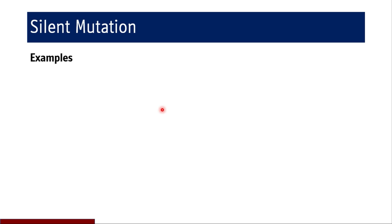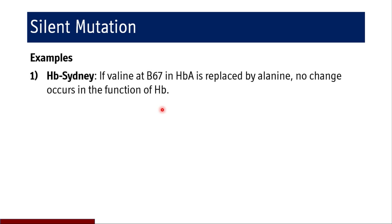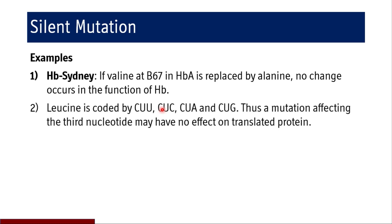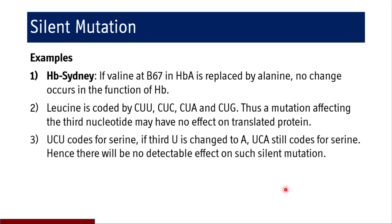An example of a silent mutation is Hb Sydney, where valine at beta-67 in adult hemoglobin is replaced by alanine with no change in hemoglobin function. Leucine is coded by CUU, CUC, CUA, and CUG — a mutation affecting the third nucleotide may have no effect due to the wobble phenomenon. Similarly, UCA codes for serine; if the third U is changed to A, UCA still codes for serine. There will be no detectable effect from such silent mutations.